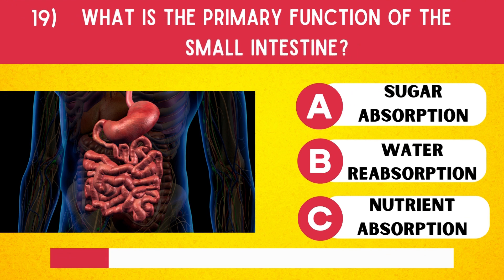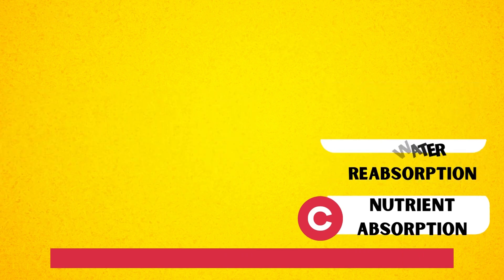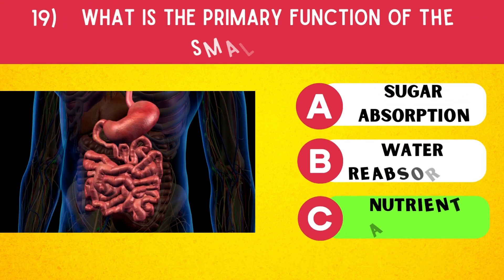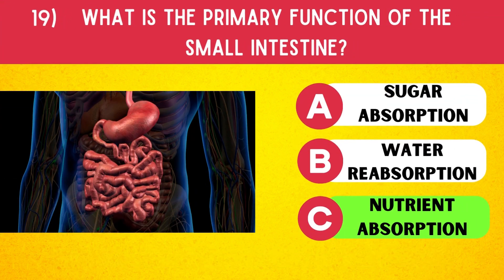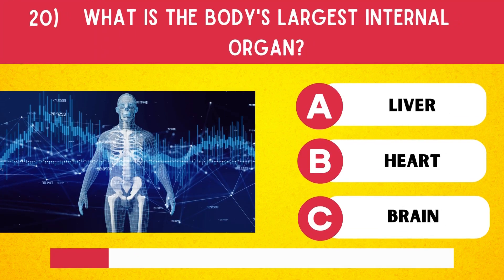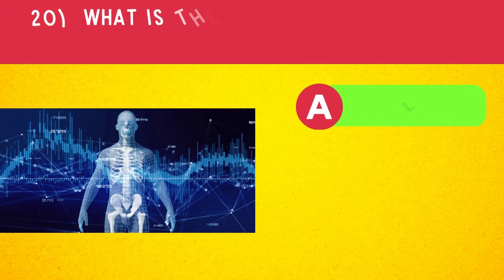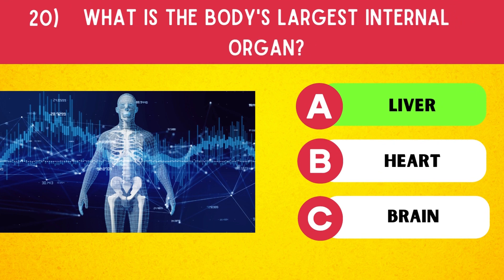What is the primary function of the small intestine? Nutrient absorption. What is the body's largest internal organ? Liver.